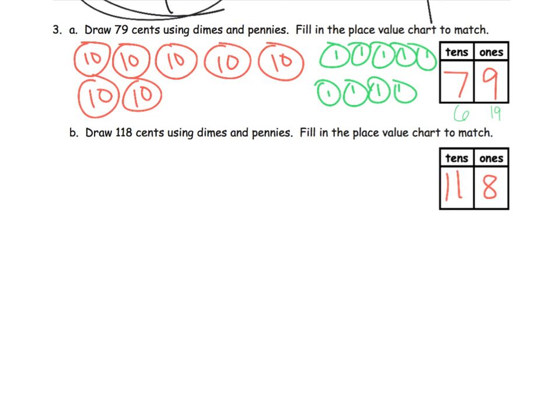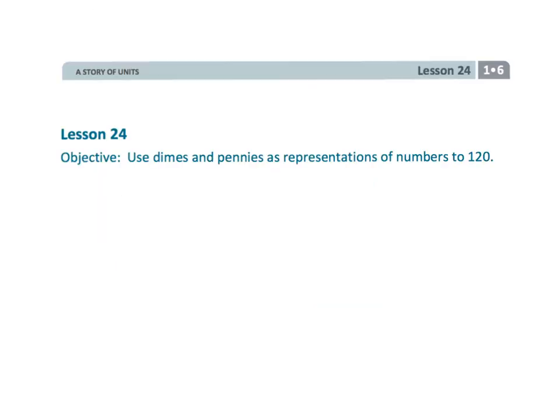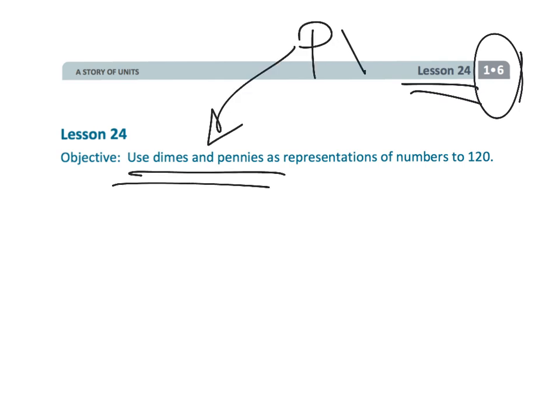The real key here is do students understand that dimes and pennies correlate to tens and ones. And that wraps up first grade module six lesson 24 using dimes and pennies to start getting into that place value and to represent numbers up to 120.